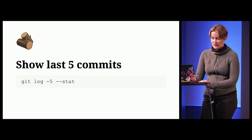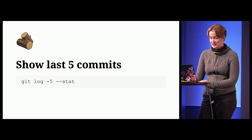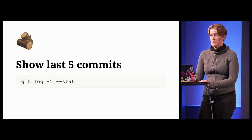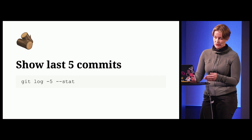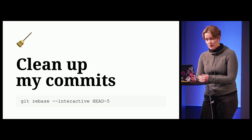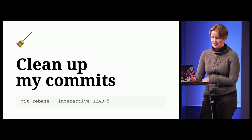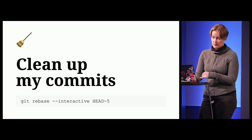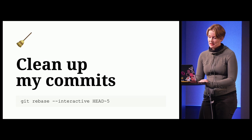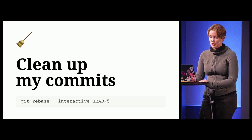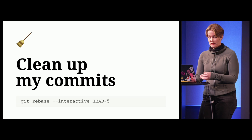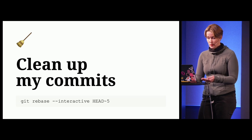Show the last five commits: minus five will show me the last five, and I can tack on different options like stats, which helps me remember a bit more about what happened in that commit. This is really useful as a first step for cleaning up my commits. Git rebase interactive — this particular example will give me a list of the last five commits, and then I can pick, squash, reorder, delete, reword, or squash some more. Another prerequisite for using this command is, again, to know which Git editor you have.